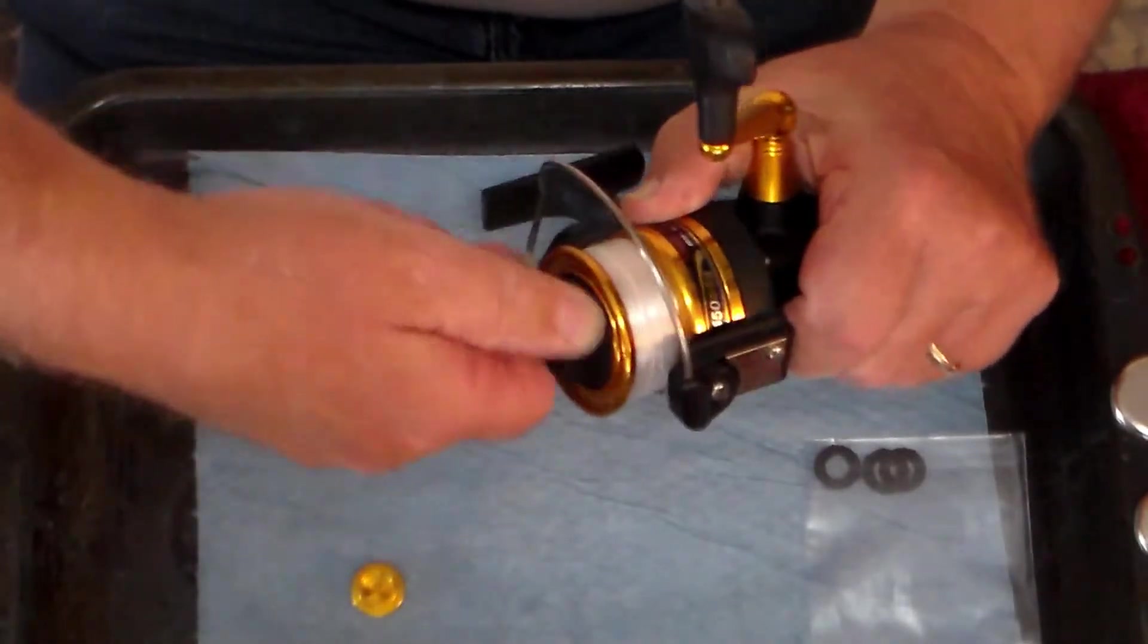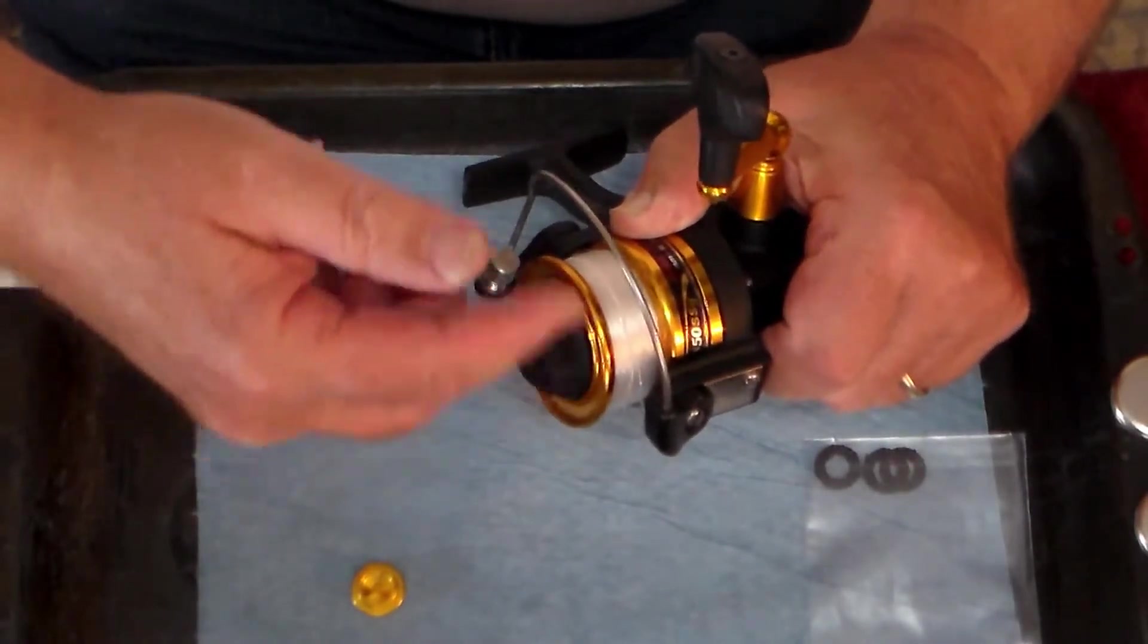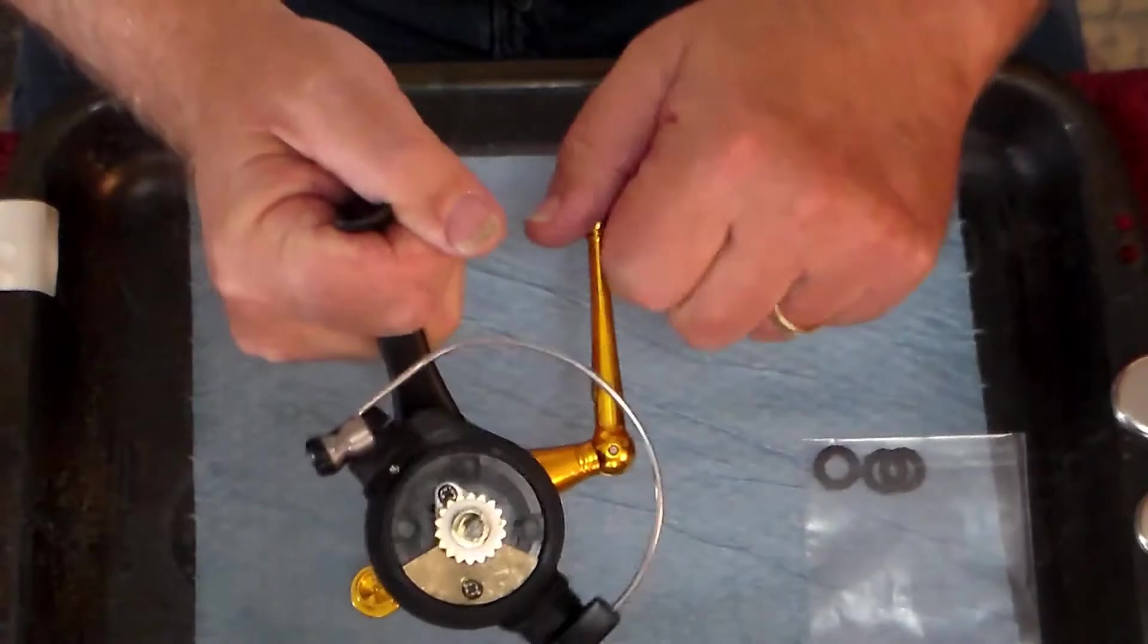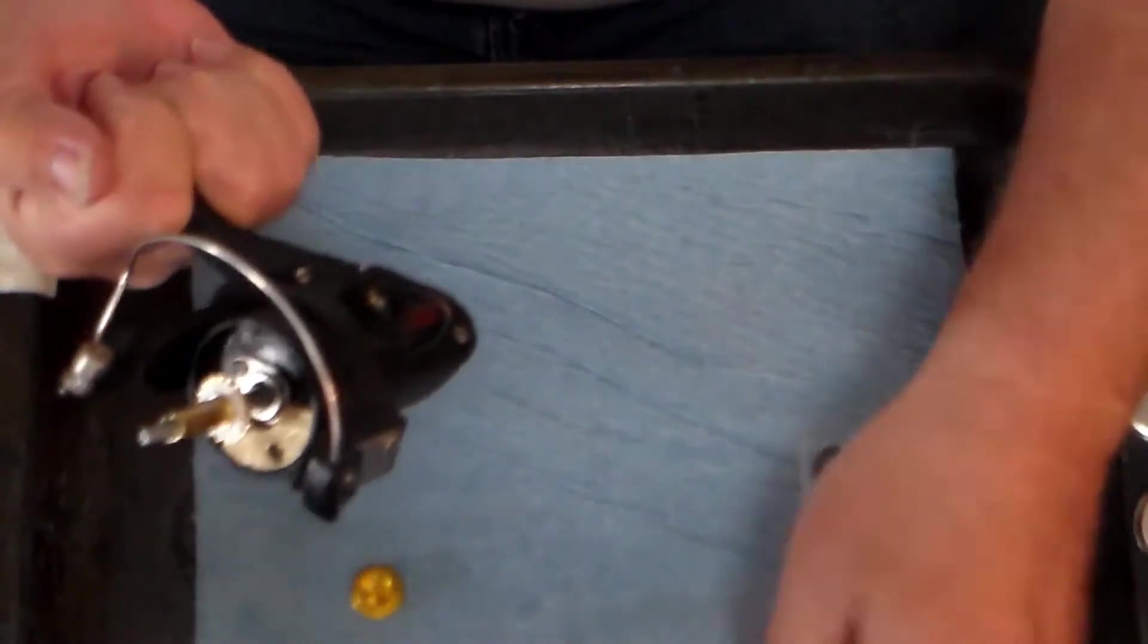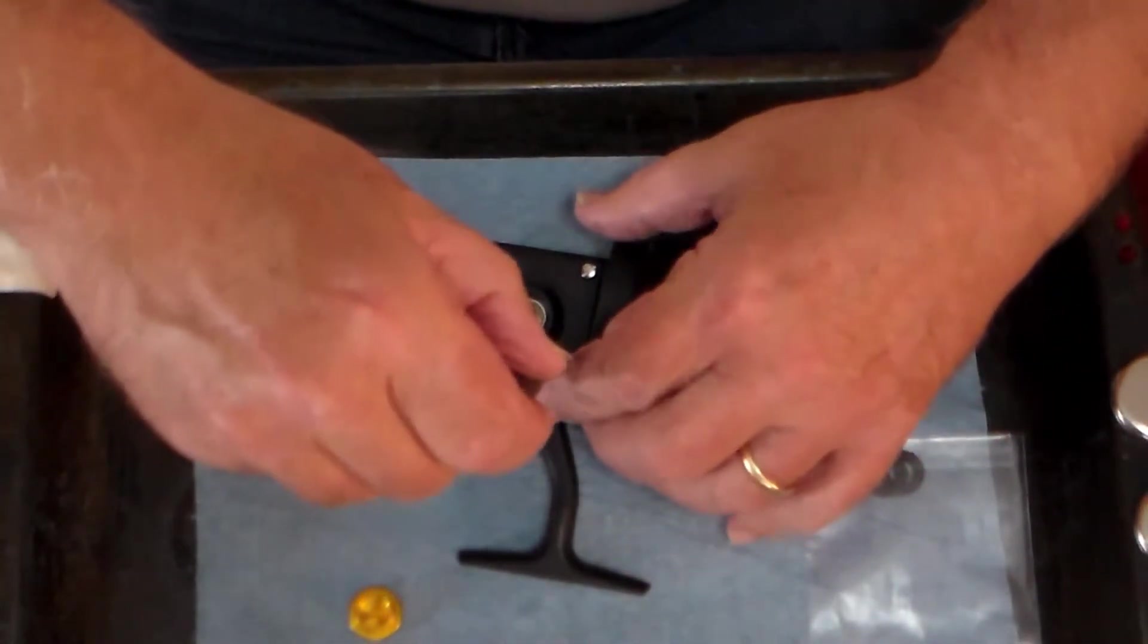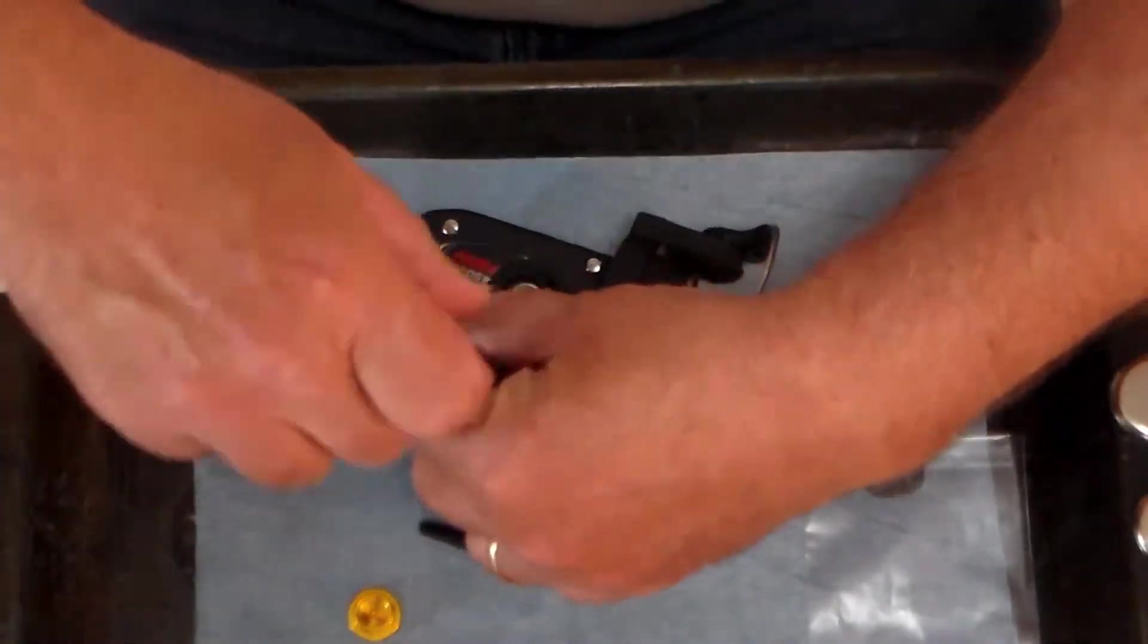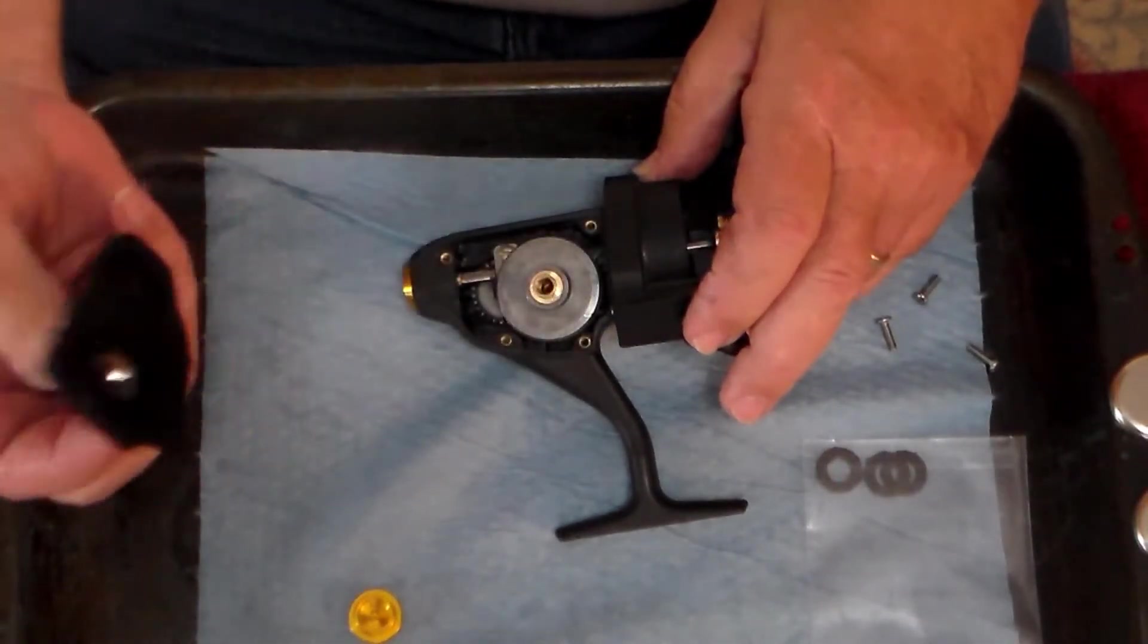We're going to start off taking off the spool. There we go. And we'll come back later, take that apart and replace the drag washers. We're going to go ahead now and remove the handle. And we're going to remove these four screws.